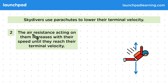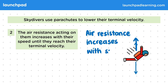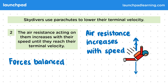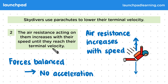In step two, the air resistance acting on them increases with their speed until they reach their terminal velocity. As the skydiver moves faster, they'll collide with air molecules more frequently, which means air resistance increases with speed. Eventually, the skydiver will reach a speed where air resistance equals their weight, so the forces are balanced. Since there's no resultant force, there is no acceleration, and the skydiver travels at constant speed — this is their terminal velocity.